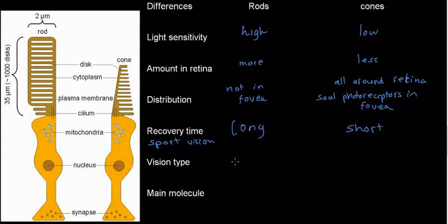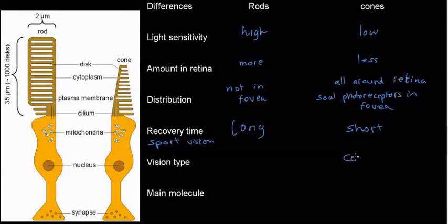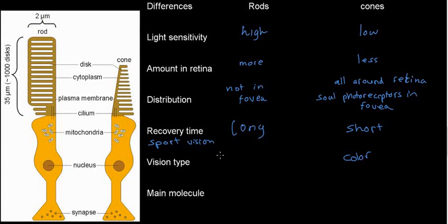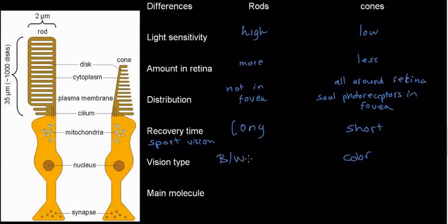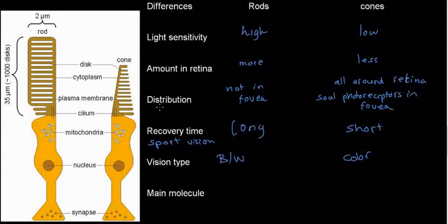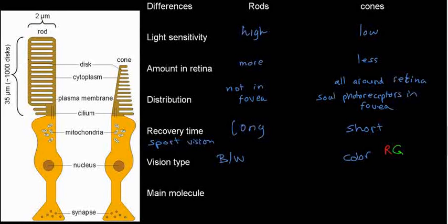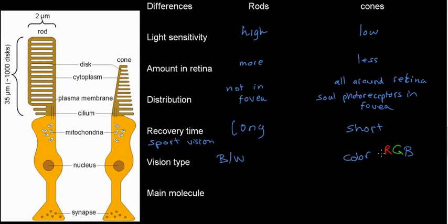Vision type: for rods it's black and white — there's no color vision. For cones we have color vision: red, green, and blue.